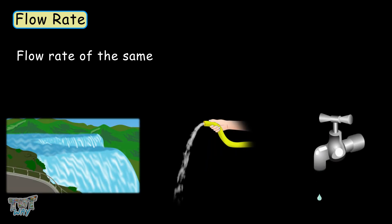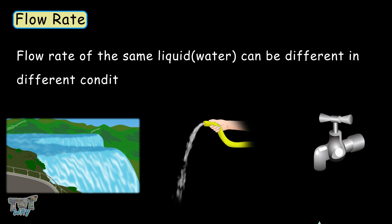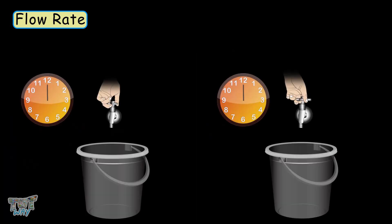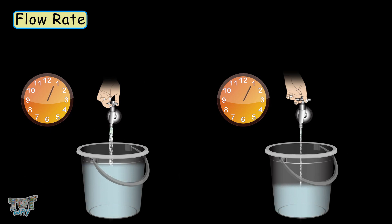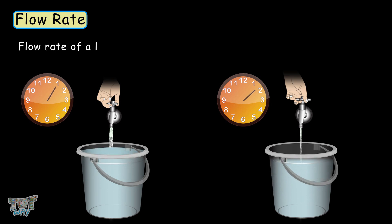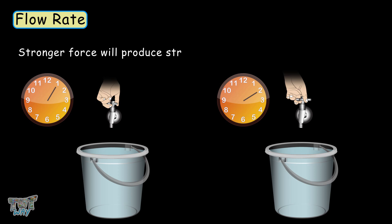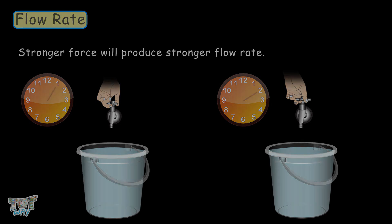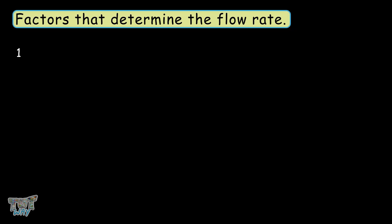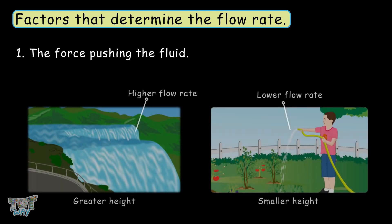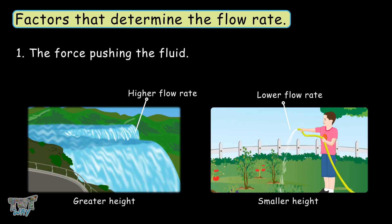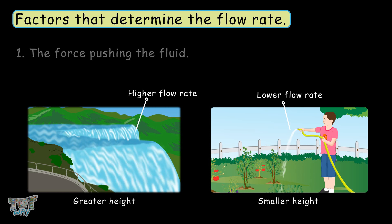Water can behave differently in different conditions. For example, water from one tap may fill a bucket in five minutes, and water from another tap may fill the same bucket in only ten minutes. Flow rate of a liquid depends on how much force is pushing the liquid — a stronger force will produce a stronger flow rate. The greater the height from which the fluid is flowing, the greater force the liquid will experience, and thus the greater the flow rate.